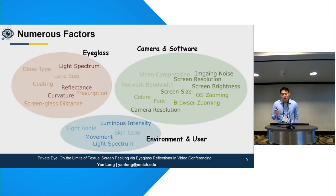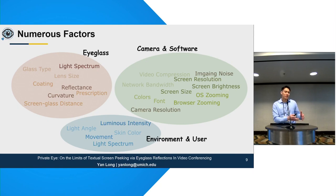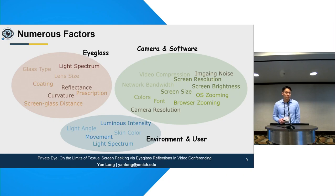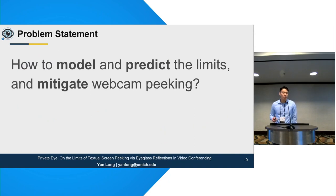Sometimes as participants we can get lucky with a set of factors that reduces the amount of information leakage, but sometimes we could also get unlucky. The question is: can we control these factors to reduce information leakage by building a model? Our work aims to model and predict the limits of such information leakage with present-day and future webcams, and to investigate how to mitigate such webcam peeking attacks.